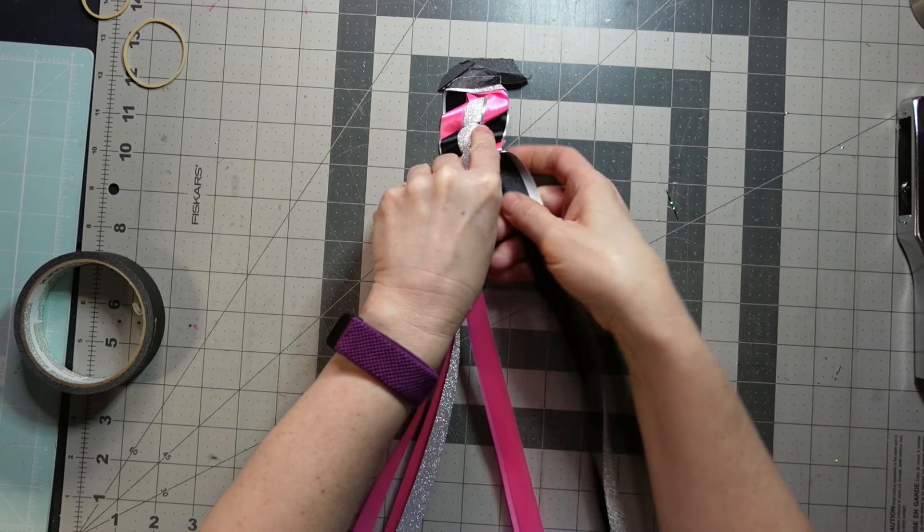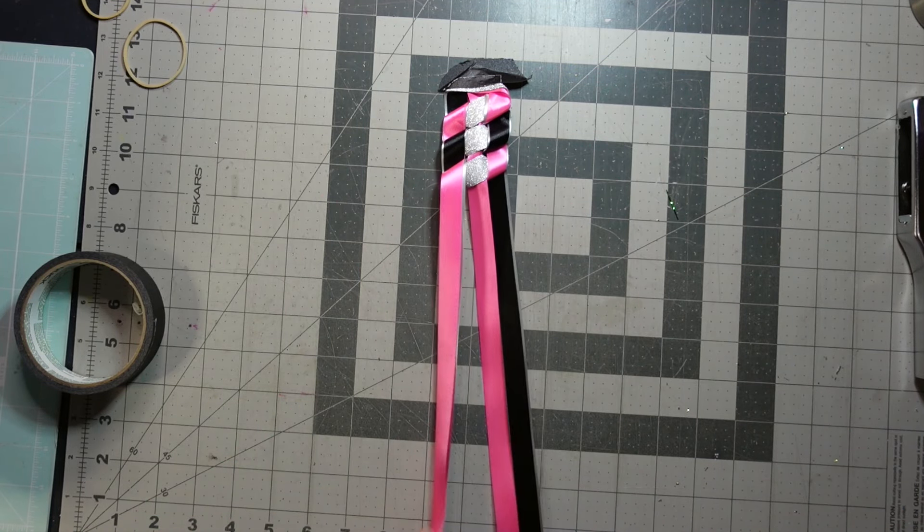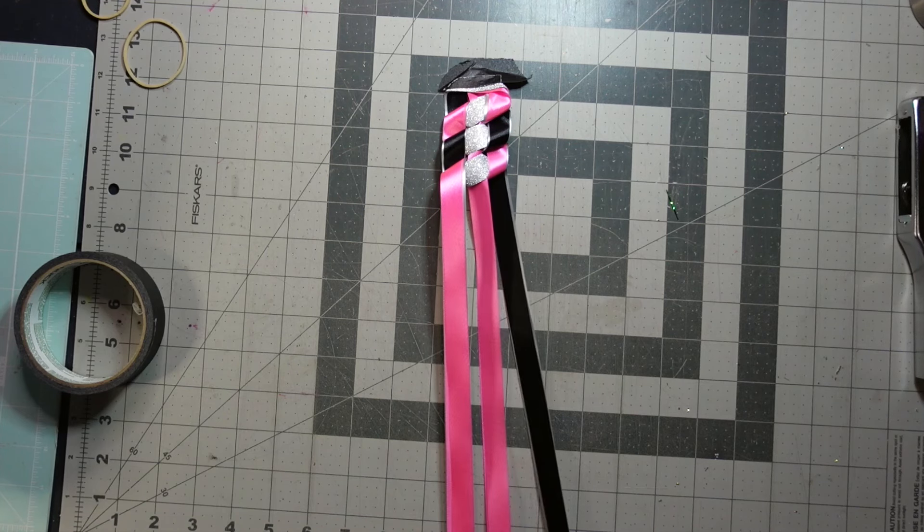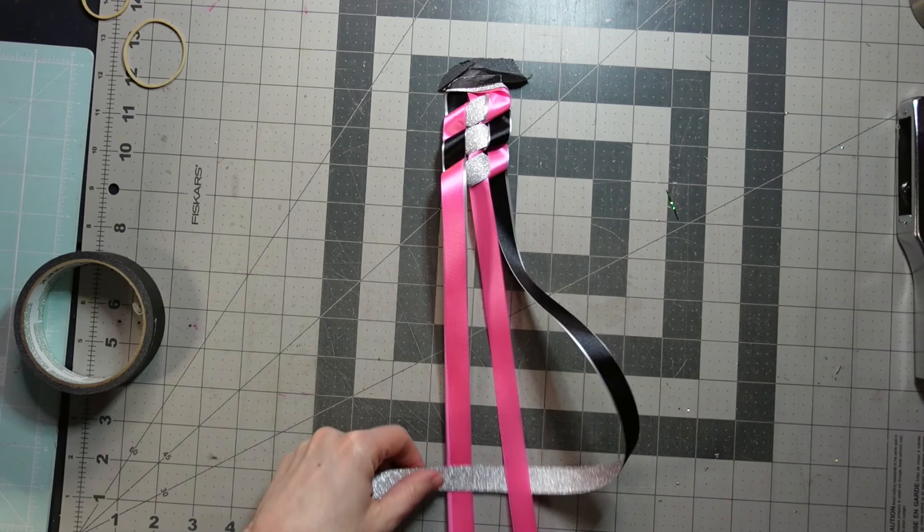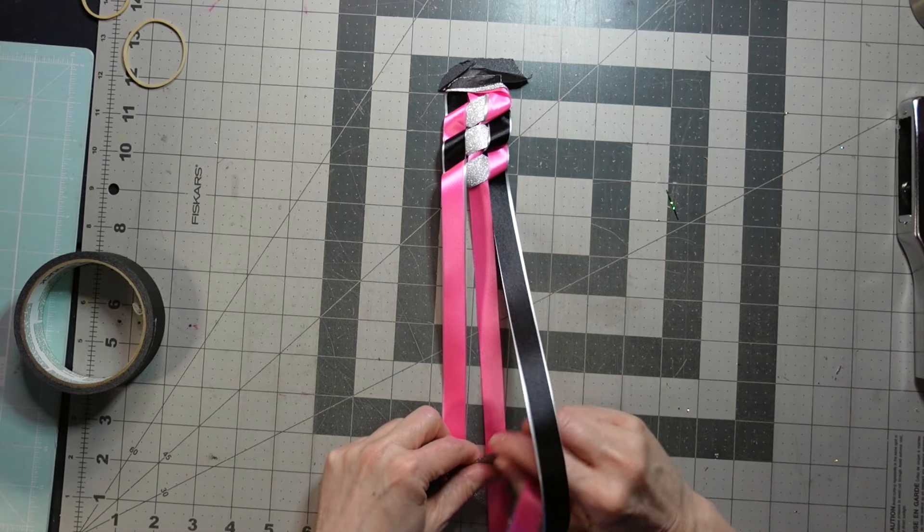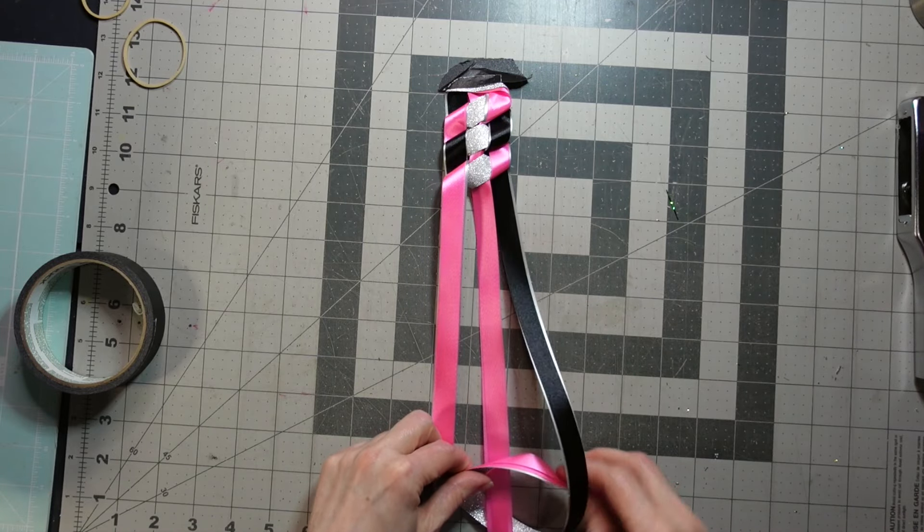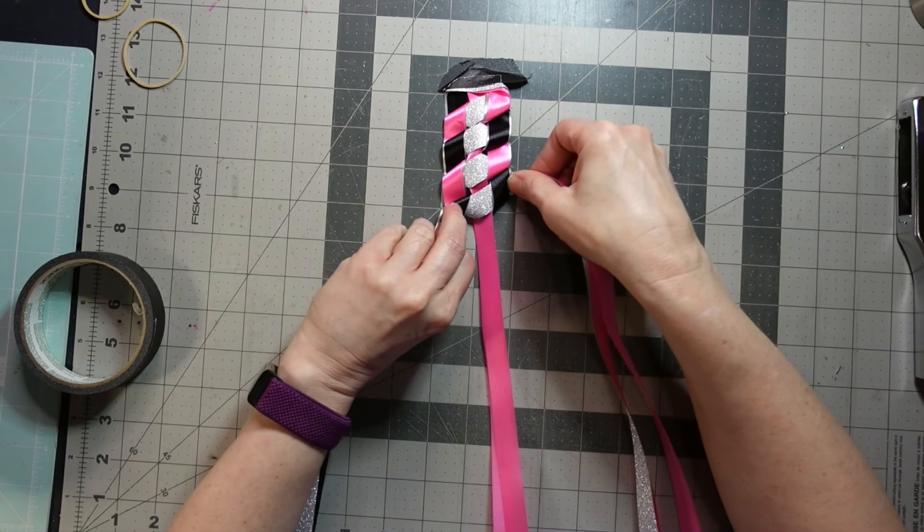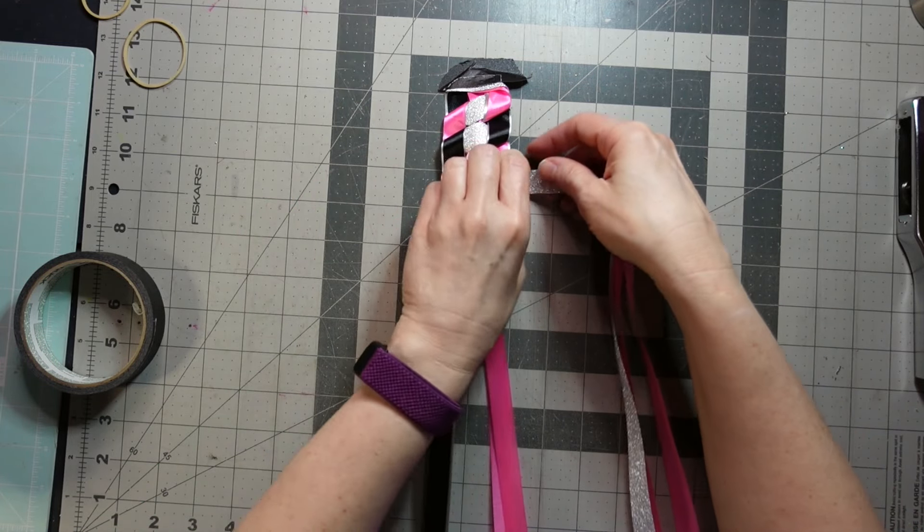You just keep going down and the one on the right is going under, the one on the left is going over. I love this braid. It's not too hard. It's not too easy. It's right there in the middle. It's pretty forgiving too. You don't have to be all perfect with it.